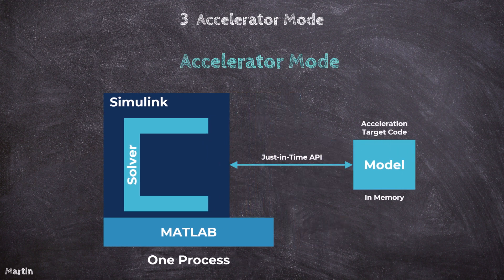By default, Accelerator Mode uses just-in-time (JIT) acceleration, generating an execution engine directly in memory rather than creating C code or MEX files. This approach enhances simulation performance by separating the model methods from the Simulink software and including them in the Acceleration Target Code, which is reused in subsequent simulations. The Acceleration Target code resides in memory and remains available for reuse as long as the model is open. Simulink serializes the target code, ensuring the model does not need to be rebuilt each time it is reopened.